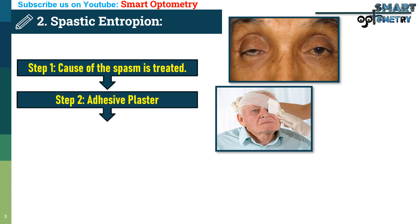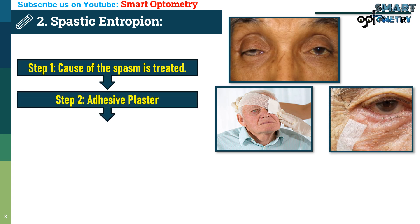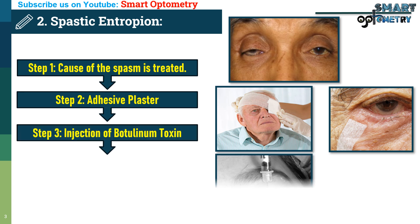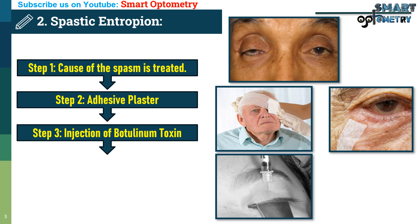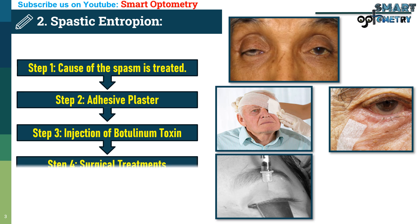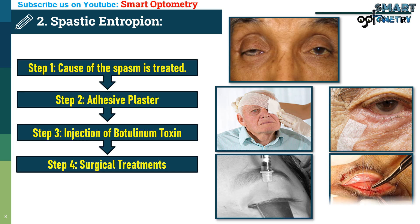Step 2: For acute spasms, adhesive plaster can be applied to gently pull the lower eyelid outward. Step 3: Injection of botulinum toxin into the orbicularis muscle can be highly effective in relieving persistent spasms. Step 4: In severe cases, surgical treatments similar to those used for senile entropion are recommended.